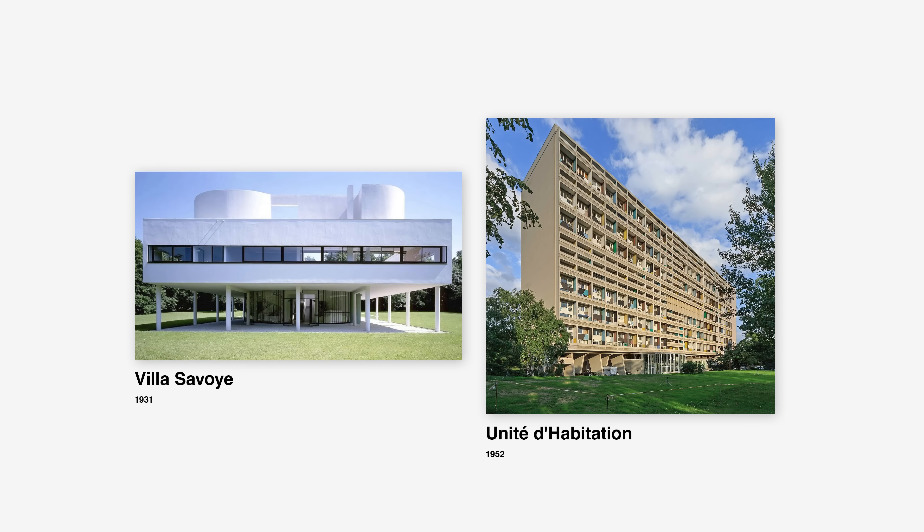Le Corbusier's architectural works, such as the Villa Savoye and the Unité d'Habitation, showcased the use of clean lines, open floor plans, and an emphasis on functionality. The principles of Swiss design are evident in the clarity and simplicity of these structures, which prioritize human needs and practical use.